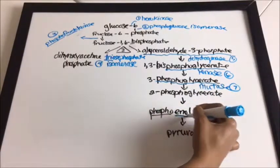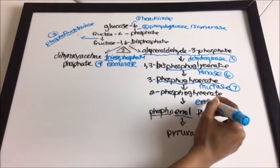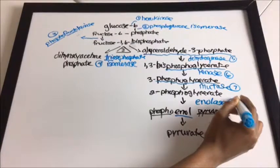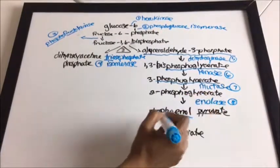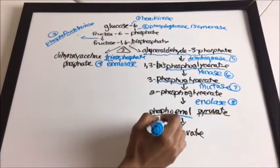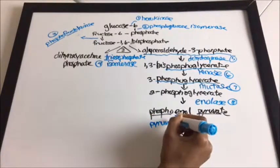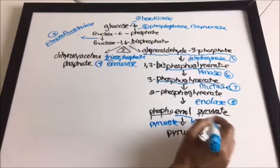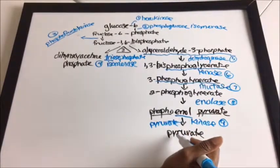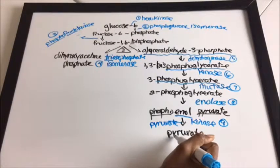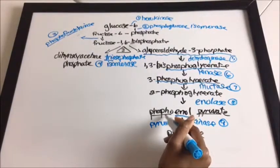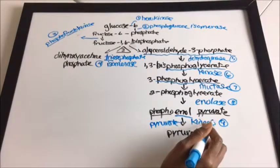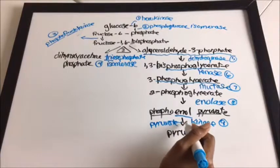It's good to remember 'enol' because the enzyme is called enolase. And lastly we have pyruvate kinase — the enzyme between phosphoenolpyruvate and pyruvate. All you have to do is remember 'kinase.'